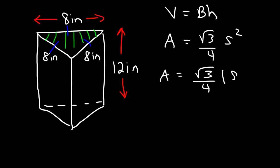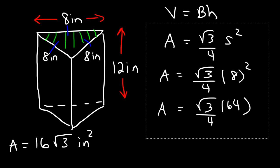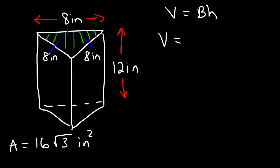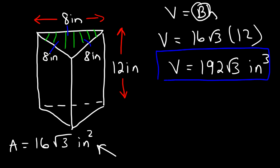In this case s is 8, so 8 squared is 64. If we take 64 and divide it by 4, that's 16. So the area of the base is 16 square root of 3 square inches. Now we can calculate the volume: capital B, the area of the base, is 16 square root of 3, and the height of the prism is 12 inches. So 16 times 12 is 192. The volume is 192 times the square root of 3 cubic inches — this is the exact answer. The decimal equivalent is about 332.55 cubic inches.